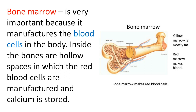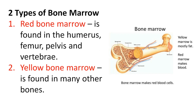Bone marrow is very important because it manufactures blood cells in the body. Inside the bones are hollow spaces where red blood cells are manufactured and calcium is stored. There are two types of bone marrow. The red bone marrow is found in the humerus, femur, pelvis, and vertebrae. The yellow bone marrow is found in many other bones.